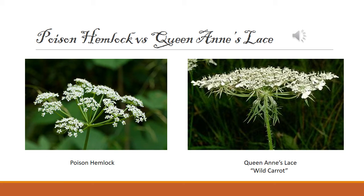Poison hemlock and Queen Anne's lace look very similar but can also be distinguished fairly easily by their flowers and also by their roots. Poison hemlock, put simply, is made up of a multitude of tiny clusters of flowers that merge to resemble a single large one, while Queen Anne's lace actually is only one cluster of tiny flowers. As you can see when examined beside one another, these two species are easily distinguished.